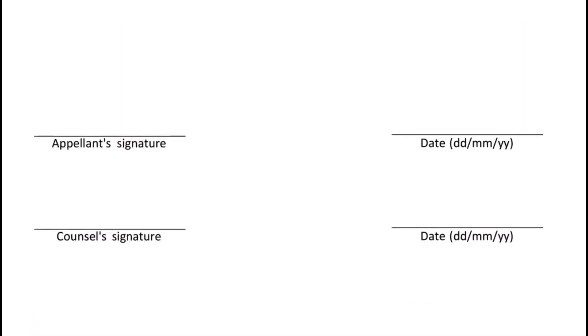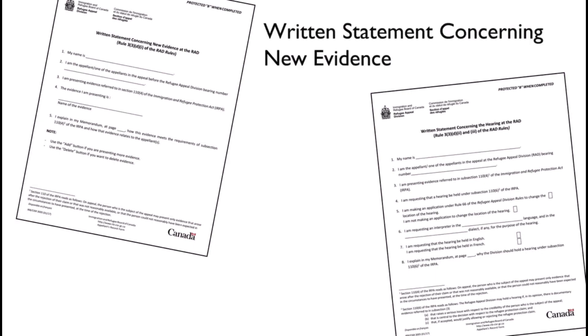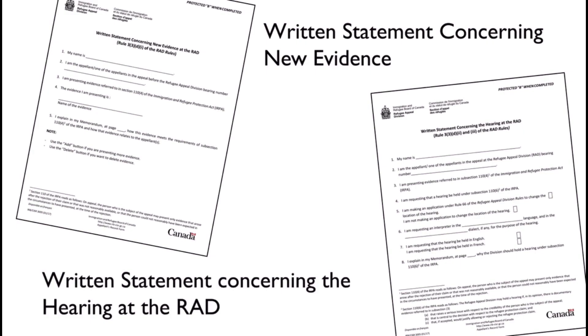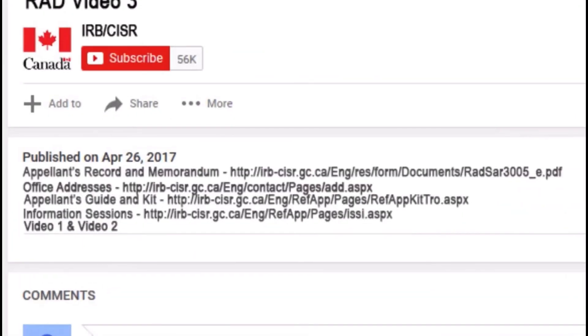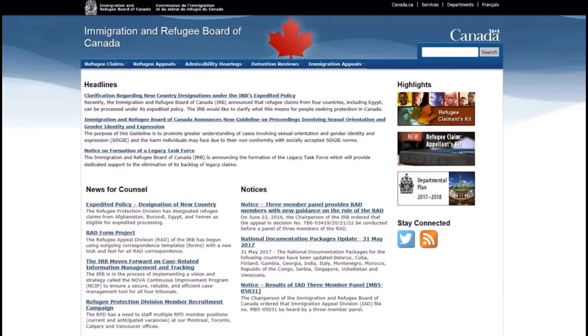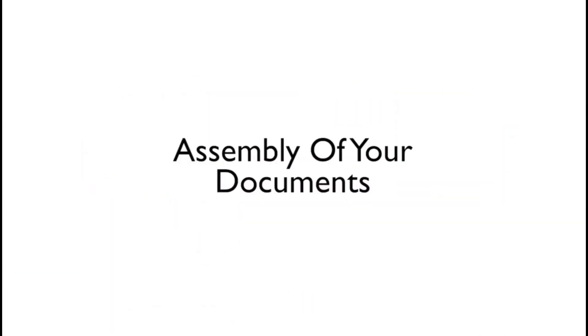Finally, print the completed form and sign and date it. If you use counsel, be sure that they sign and date the form as well. If you have submitted new evidence, you must also include the Written Statement Concerning New Evidence form. And if you have requested an oral hearing, you must include the Written Statement Concerning the Hearing at the RAD form. Both forms can be found in the description below the video.